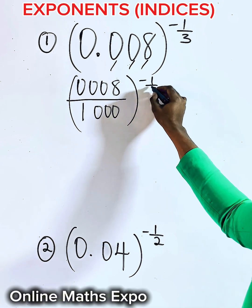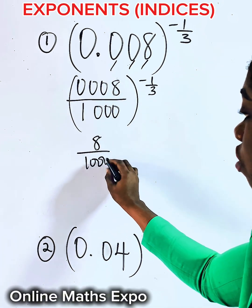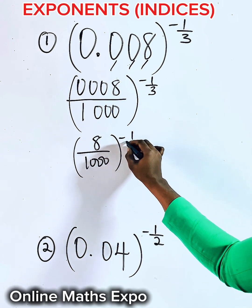So it's raised to the power of negative one-third. This is the same as 8 over 1,000 raised to the power of negative one-third.